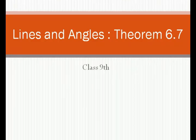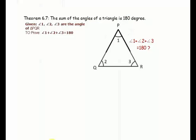Topic: Theorem 6.7 - The sum of the angles of a triangle is 180 degrees. Given angles 1, 2, and 3 are the angles of triangle PQR, where angle 1 plus angle 2 plus angle 3 equals 180.